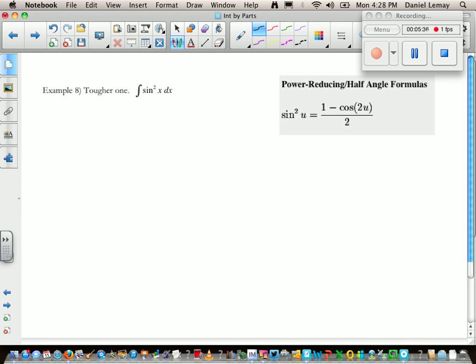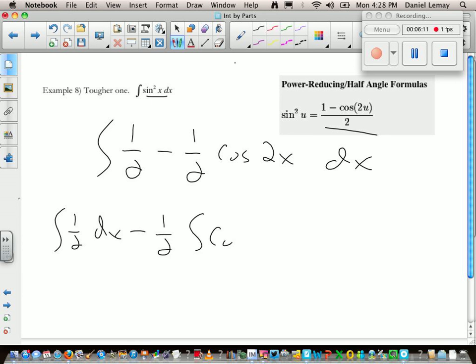Alright, so here's a nasty problem that I figured I wanted to do for you. You didn't do too many of these power reducing identities last year, so I'm going to give this to you. But what you want to do is to break this down to make it something that's manageable that we can work on. I'm just going to replace this with that and I'm also going to write it as one half minus one half times cosine 2x dx.